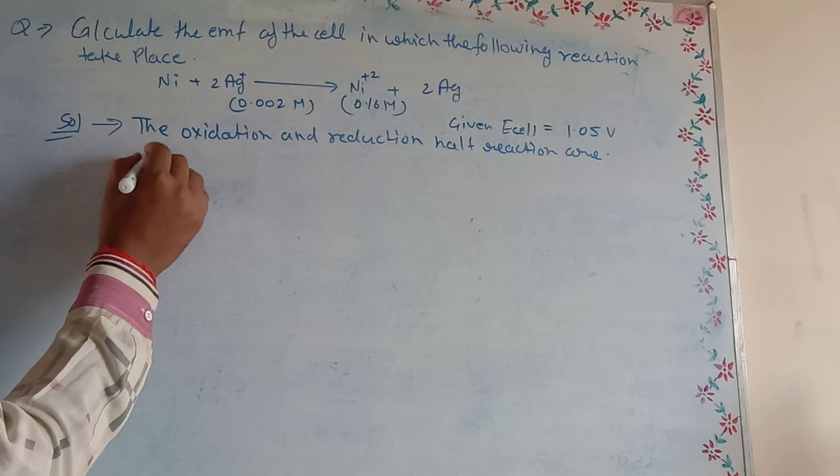Topic is complete. Next numerical: Calculate the EMF of the cell in which the following reaction takes place. The oxidation and reduction half reactions are: Ni → Ni²⁺ + 2e⁻ at anode, and 2Ag⁺ + 2e⁻ → 2Ag at cathode.